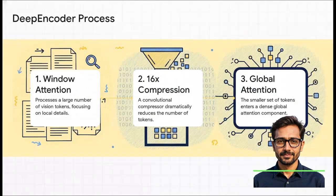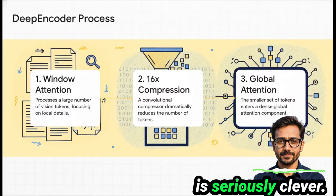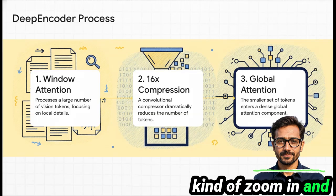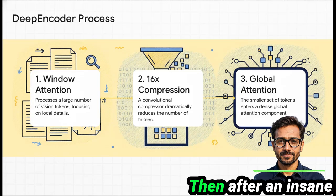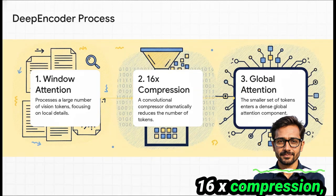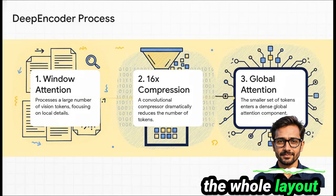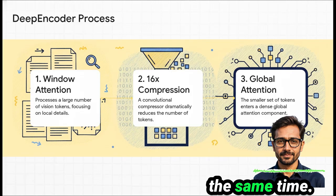Now, if we drill down a little deeper, that deep encoder part is seriously clever. First, it uses something called window attention to kinda zoom in and look at all the fine details, you know, the actual shapes of the letters. Then after an insane 16x compression, it uses global attention to zoom back out and get the big picture. The whole layout of the page. It's literally seeing both the trees and the forest at the same time.